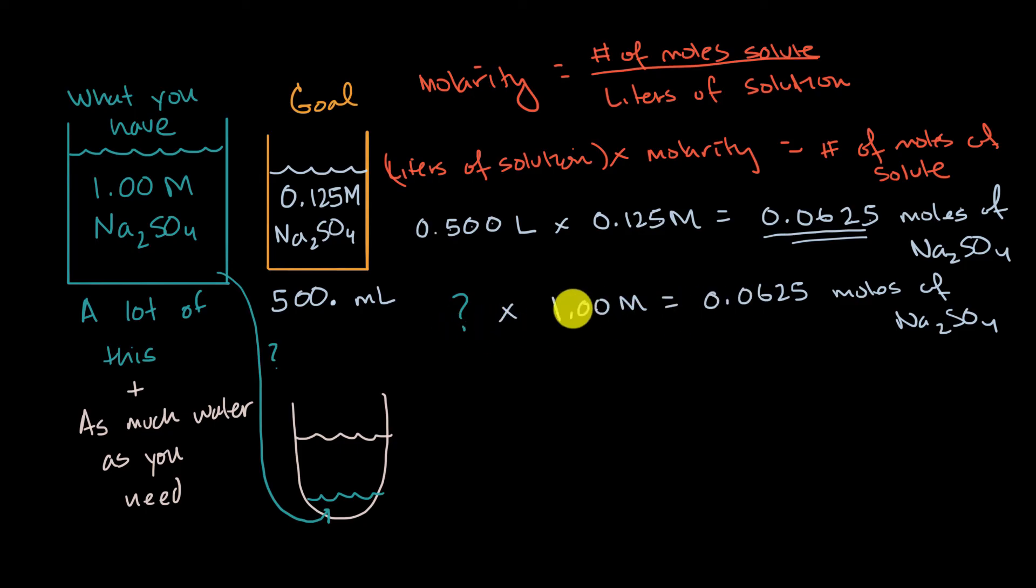And the math here is pretty straightforward. We can divide both sides by one molar, and what are we going to get? And the units work out because we're in moles, where we have molar here, and so this is going to give us our answer in liters. You divide both sides by one molar, you're going to get that question mark is equal to 0.0625 liters of solution.